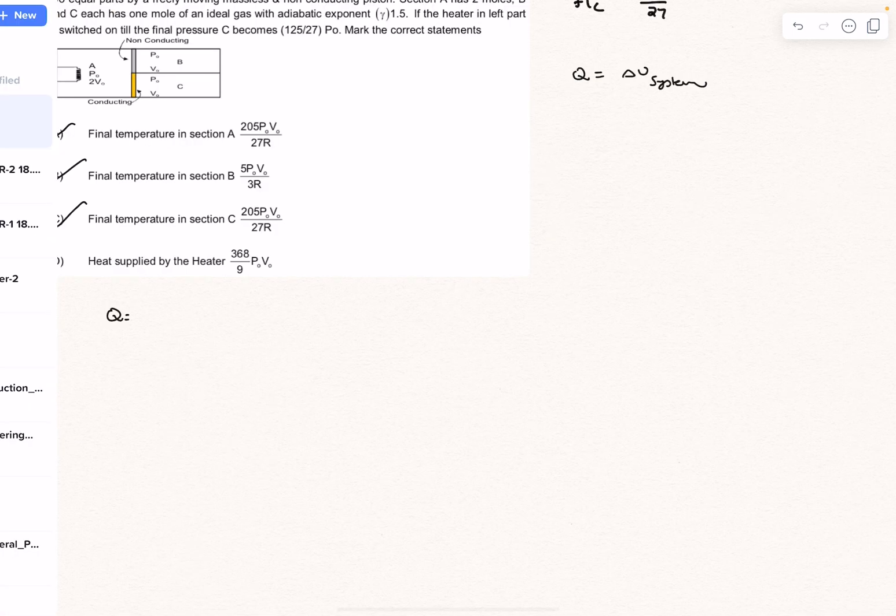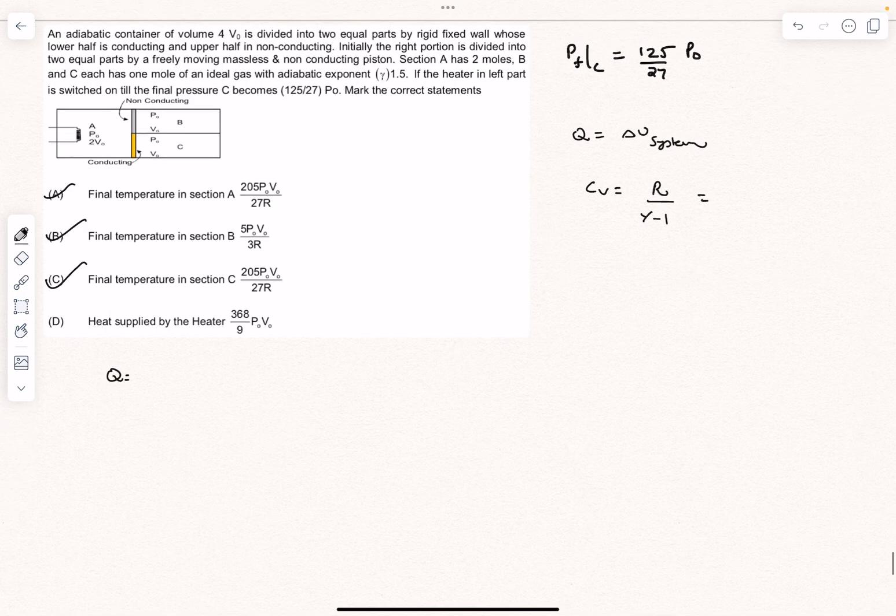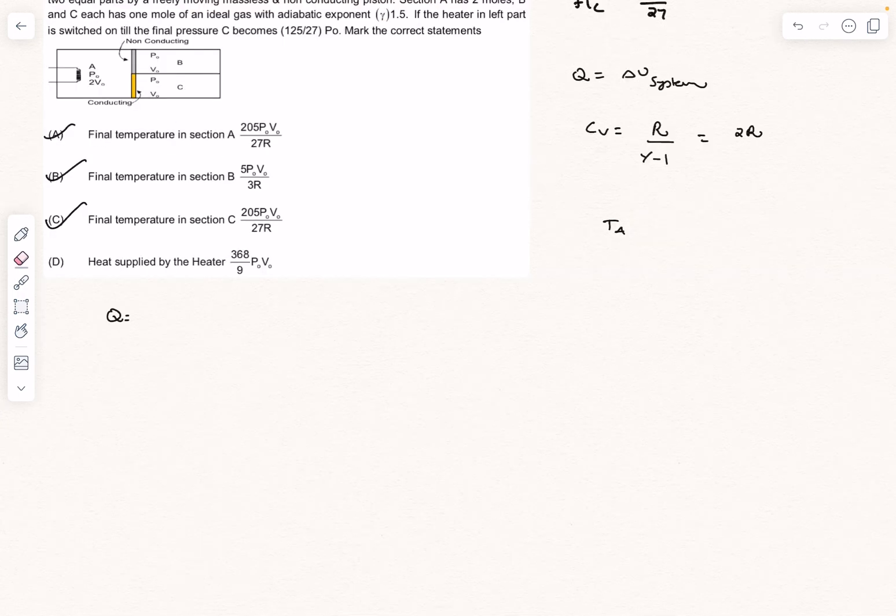To write the change in internal energy, we need the CV of the system. CV is actually the ideal gas constant divided by gamma minus 1, which comes out to be 2R. We have the final temperatures of all the sections.